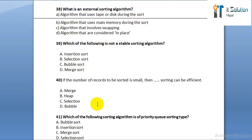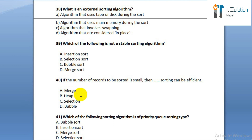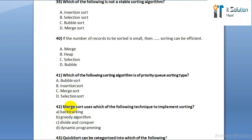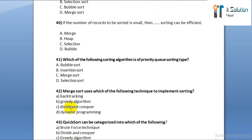Question number forty: if the number of records to be sorted is small, then which sorting can be efficient? Option A: merge. Option B: heap. Option C: selection. Option D: bubble.